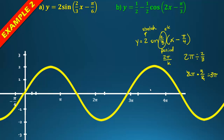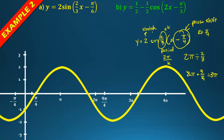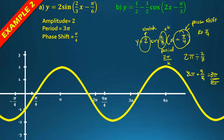The phase shift is π/4 to the right because of that negative sign inside the parentheses. Amplitude is 2, period is 3π, and the phase shift is π/4.